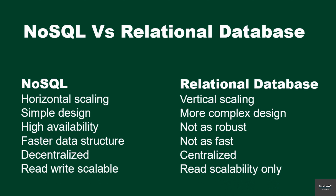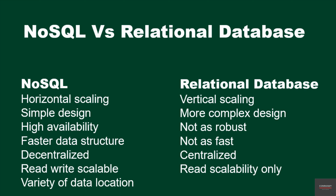With a NoSQL database, the data can come from a variety of locations, while in a relational database, the data is usually from one or fewer locations.